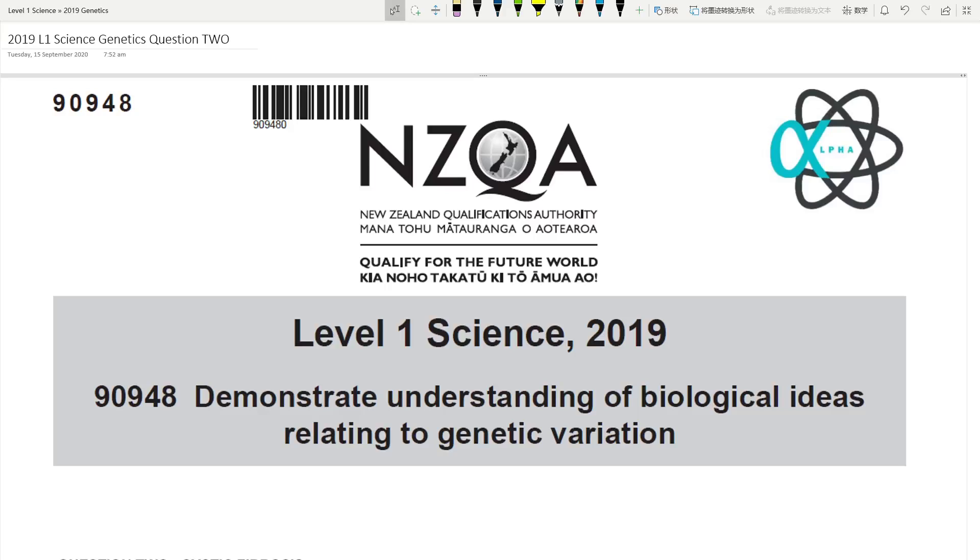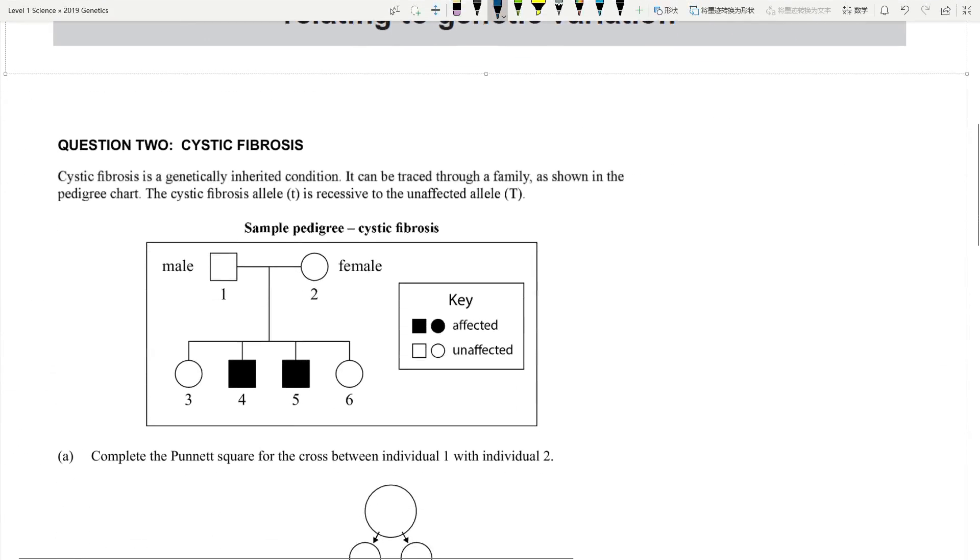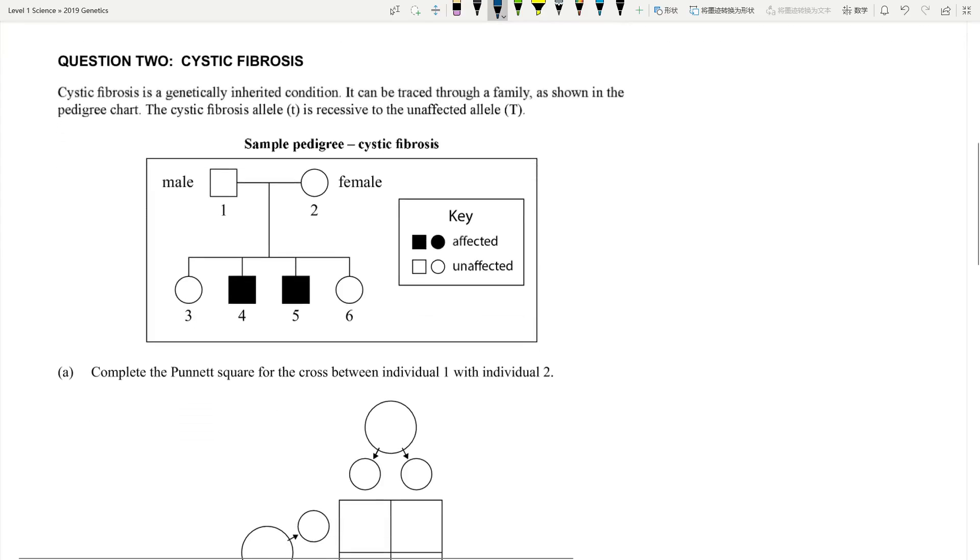Hello everyone, we are going to continue with 2019's level 1 science genetics variation exam and we are going to look at question 2 today. So this is a very short question again. This is your typical pedigree chart type of question except this is only two generations with four offsprings and two parents so very straightforward. Make sure you read the question properly.